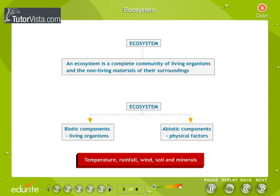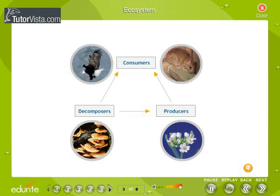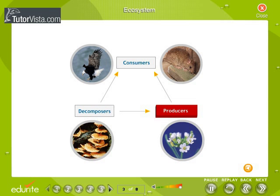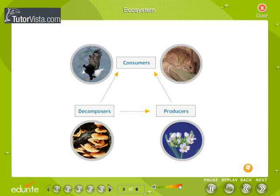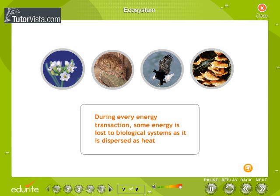Ecosystem. Organisms can be grouped as producers, consumers and decomposers according to the manner in which they obtain their sustenance from the environment. During photosynthesis, producers use the energy from sunlight to make complex molecules from carbon dioxide and water. Consumers obtain energy when they eat producers or consumers that eat producers. Wastes and dead organic materials supply decomposers with energy. During every energy transaction, some energy is lost to biological systems as it is dispersed as heat.